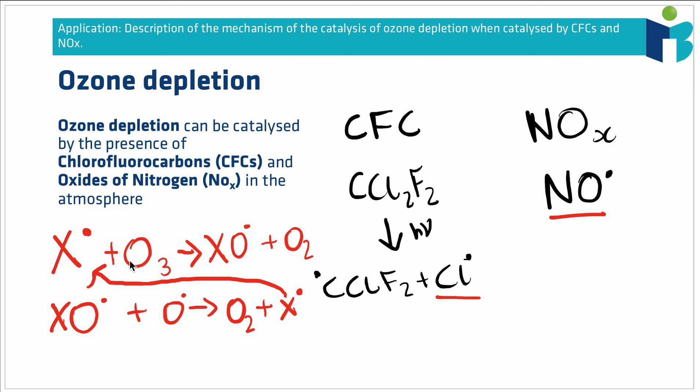This is what's known as a catalytic cycle, because our X radical is catalyzing the destruction of ozone. If we think about the overall reaction, adding these two reactions together in the same way we might two equations,